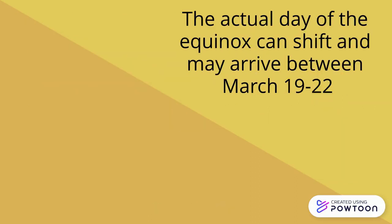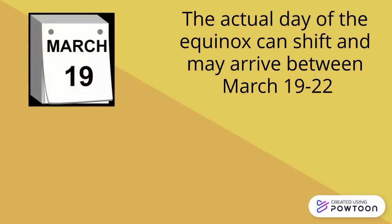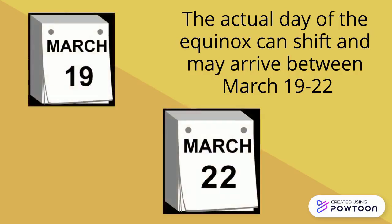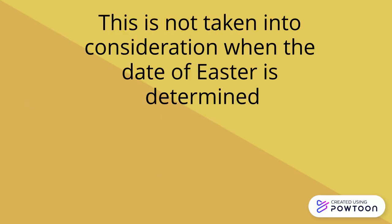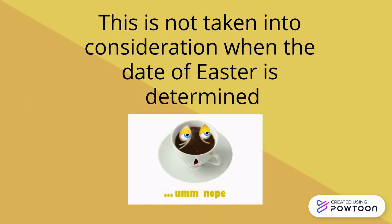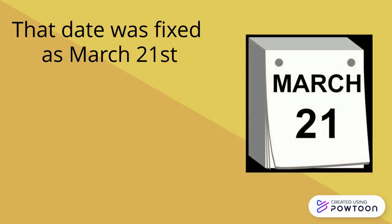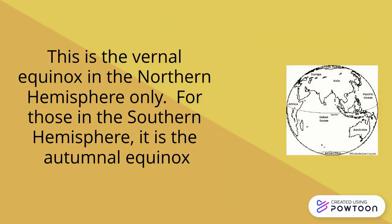The actual date of the equinox can shift and may arrive between March 19th through the 22nd. This is not taken into consideration when the date of Easter is determined. That date was fixed as March 21st. This is the vernal equinox in the northern hemisphere only.